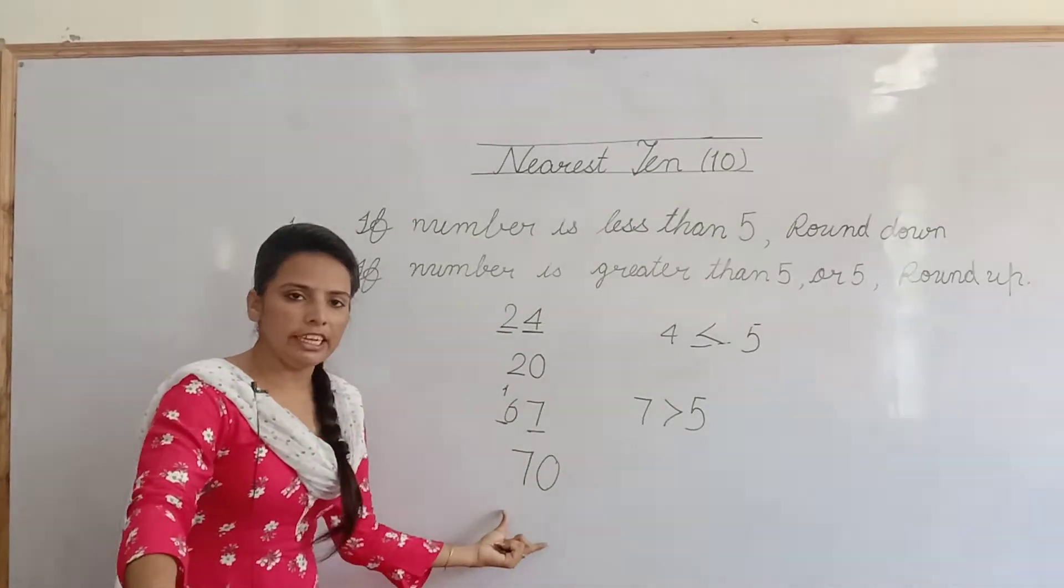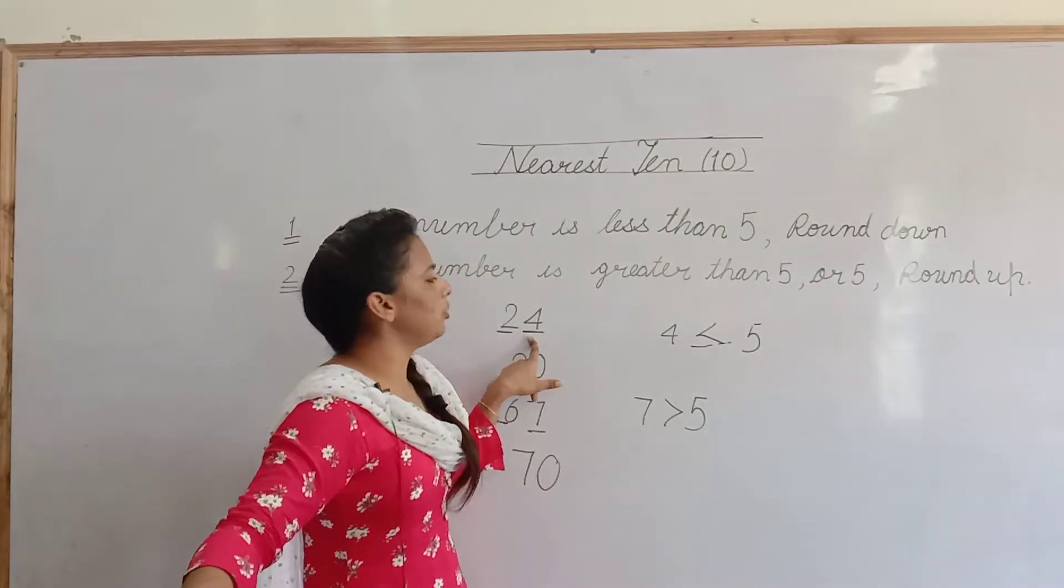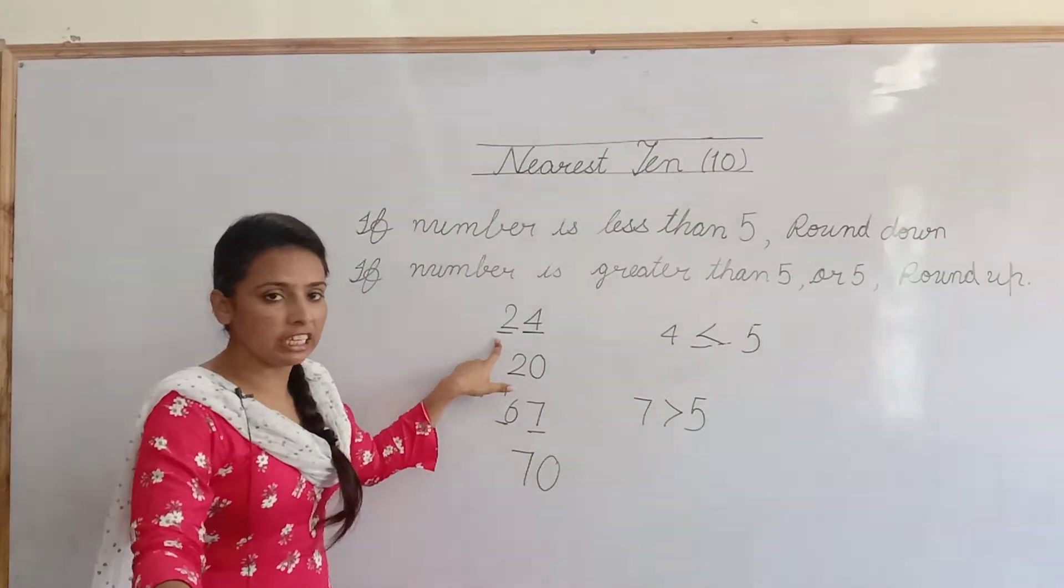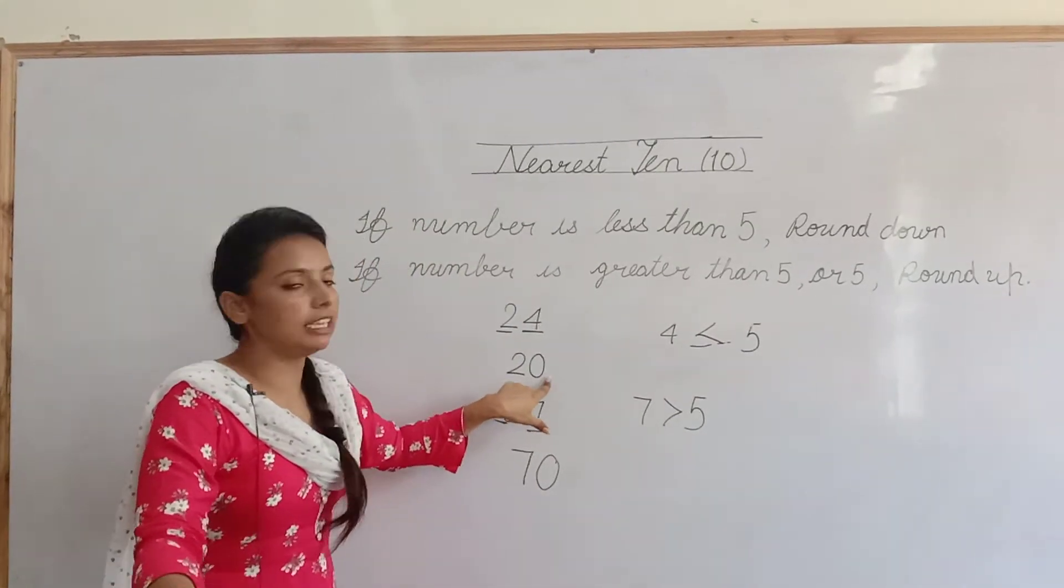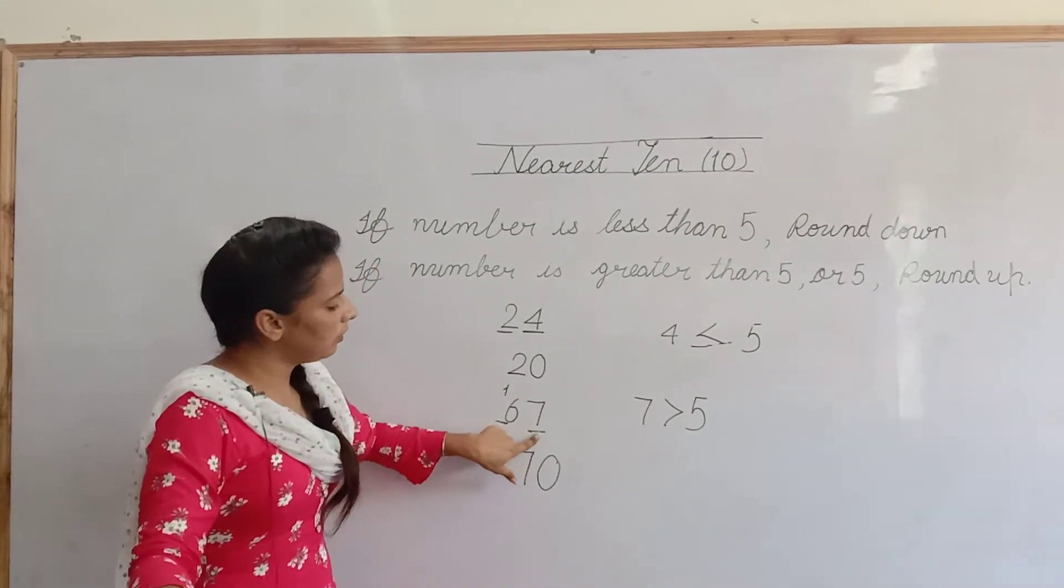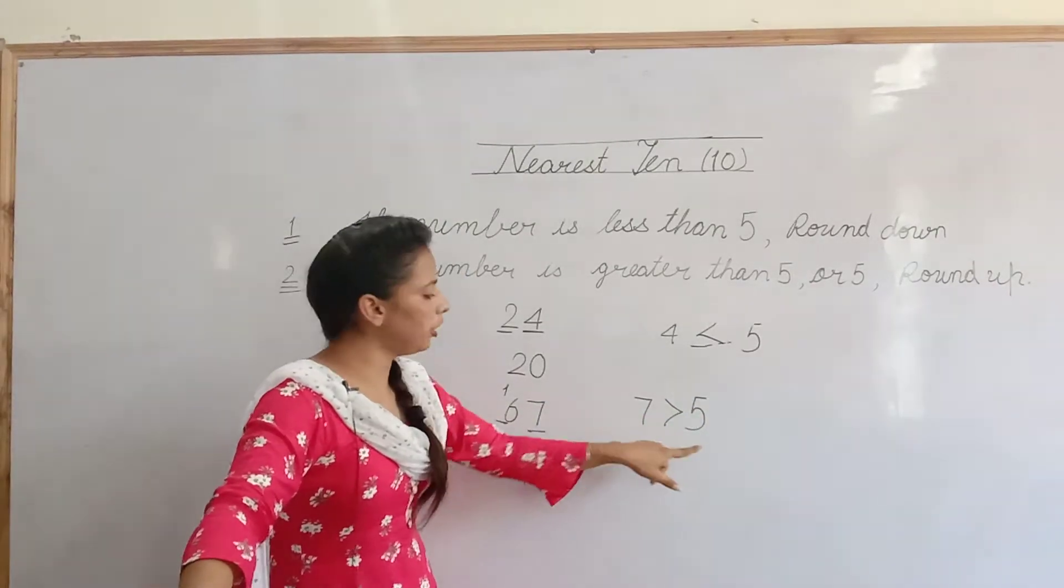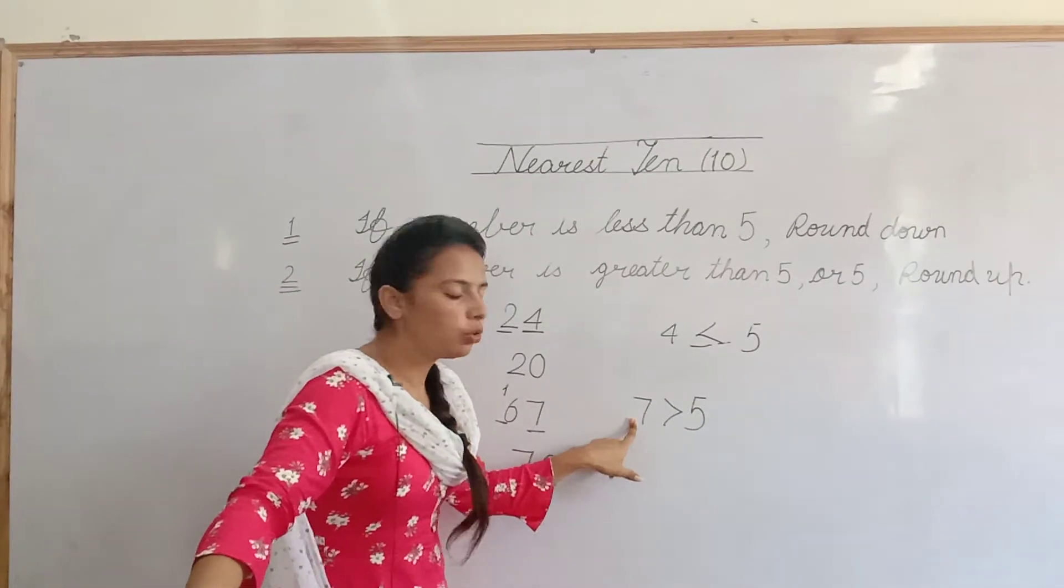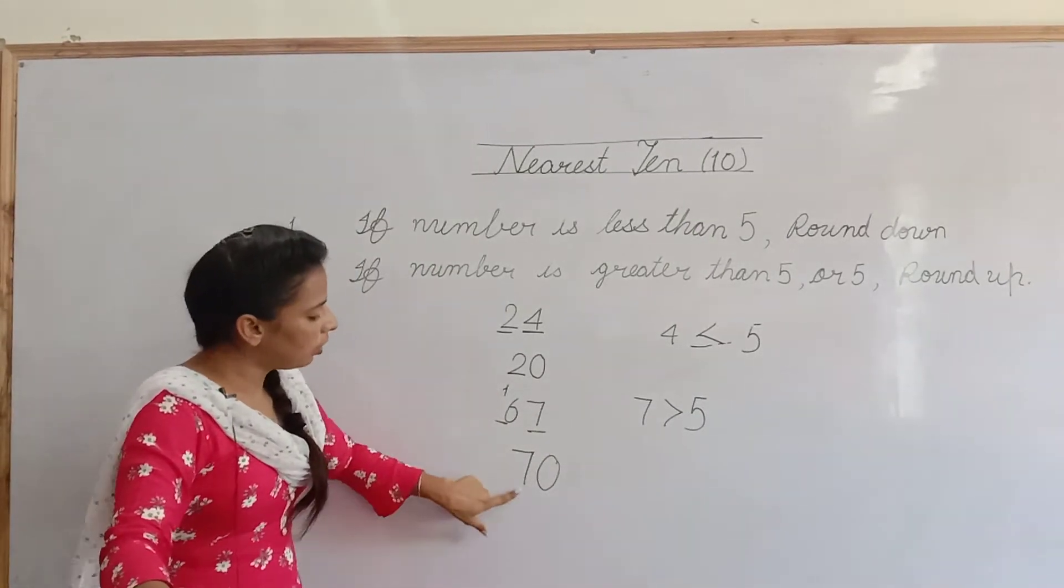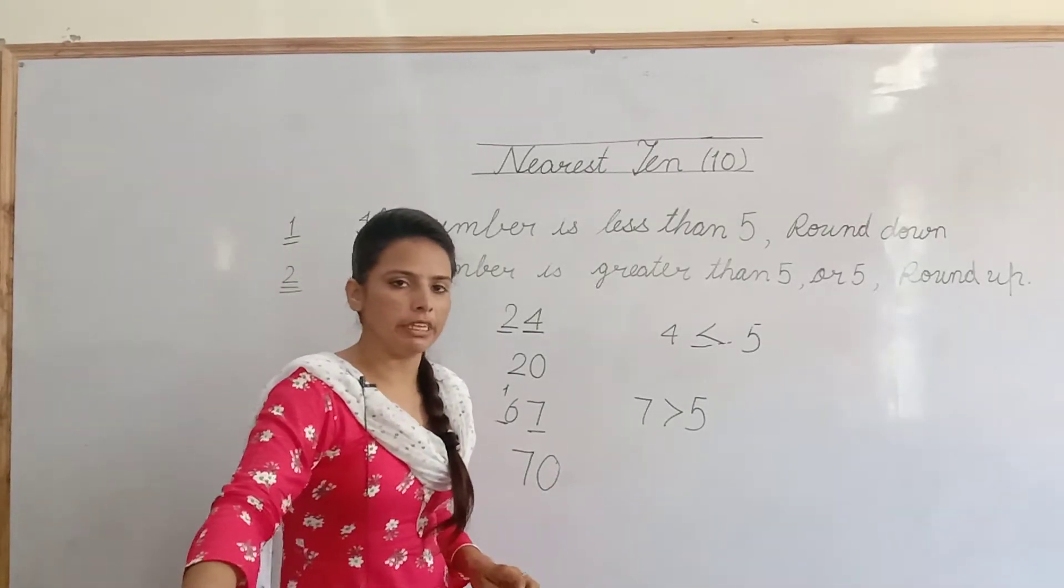اب اس میں میں آپ کر سکتے ہو. Firstly, تو 2 digit والے دیکھو. Nearest 10 میں کیسے estimate کریں گے ہم? اگر one's place پہ جو digit ہے, وہ 5 سے چھوٹی ہے. تو ہم 10th place کو change نہیں کریں گے. As it is write کر کے آگے 0 add کریں گے. لیکن اگر next, one's place والی digit 7 سے بڑی ہے. Sorry, 5 سے بڑی ہے. تو ہم کیا کریں گے? 10th place پہ جو digit ہے, اس میں 1 add کر کے write کریں گے. اور آگے 0 write کر دیں گے. One's place پہ.